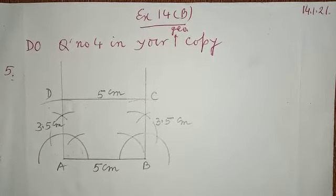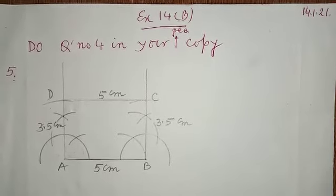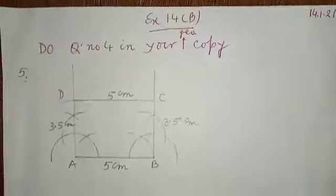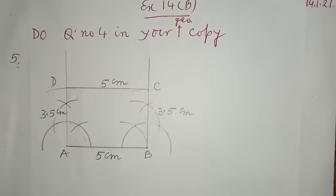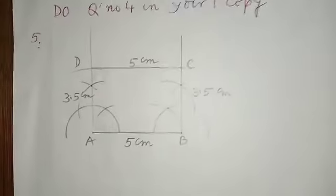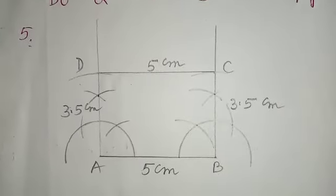Now question number 5: draw a rectangle whose two adjacent sides are 5 cm and 3.5 cm. Make use of a pair of compasses and a ruler only.